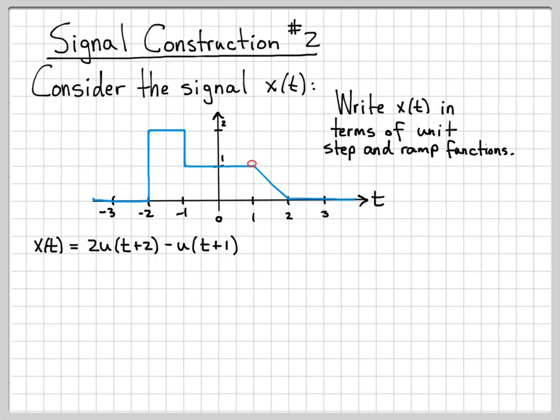And the next thing that happens is we start ramping downward. So at time one, I know I'm going to have some type of ramp signal. The ramp in this case has a slope of minus one, you can see that pretty easily, it goes down one and over one. So it has a slope of negative one. So I need to subtract off one times a ramp function at t minus one, because that's when the decrease starts occurring.